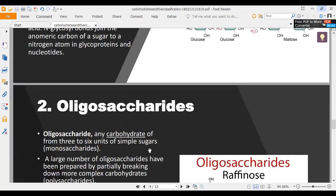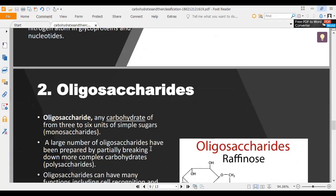Oligosaccharides are carbohydrates formed from 3 to 16 simple sugars. Large numbers of oligosaccharides have been prepared by partially breaking down more complex carbohydrates, the polysaccharides.